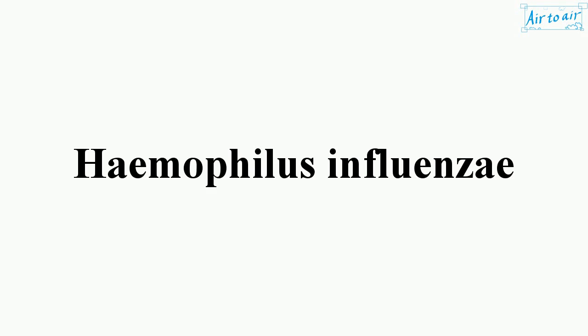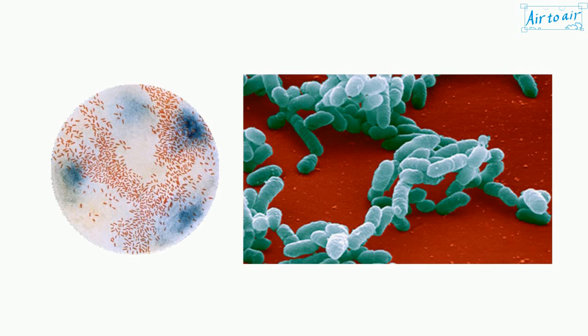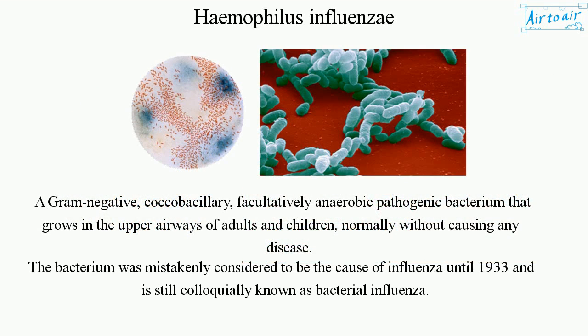Haemophilus influenzae. A gram-negative, coccobacillary, facultatively anaerobic pathogenic bacterium that grows in the upper airways of adults and children, normally without causing any disease. The bacterium was mistakenly considered to be the cause of influenza until 1933 and is still colloquially known as bacterial influenza.